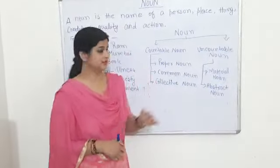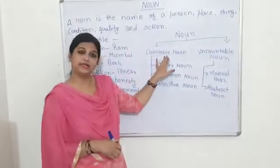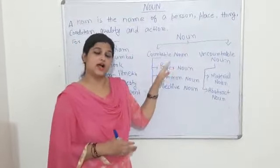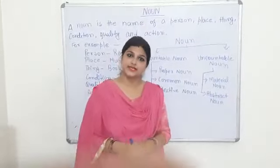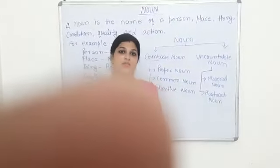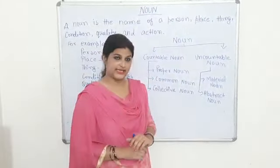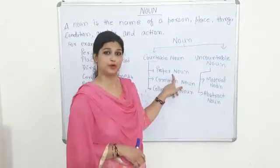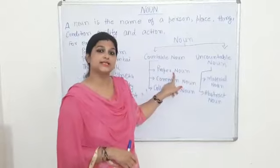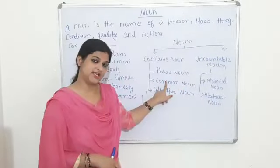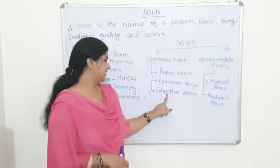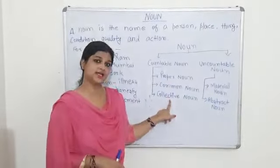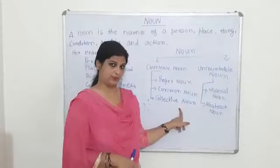Further, countable nouns are divided into three sub-parts. First one is proper noun, second one is common noun, and third one is collective noun.